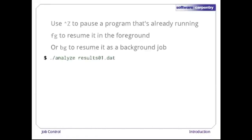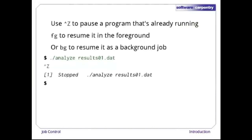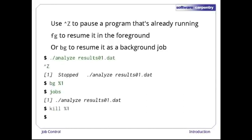For example, let's run Analyze again and then type Ctrl-Z. The shell immediately tells us that our program has been stopped and gives us its job number. If we type 'bg %1', the shell starts the process running again but in the background. We can check that it's running using jobs, and if we want, kill it while it's still in the background using kill and the job number. This has the same effect as bringing it to the foreground and then typing Ctrl-C.